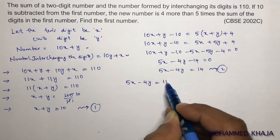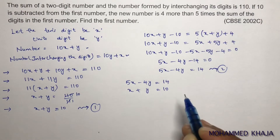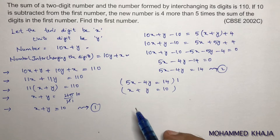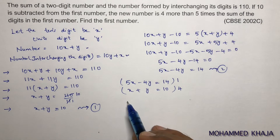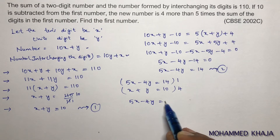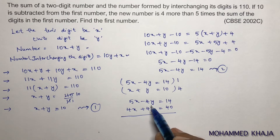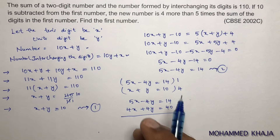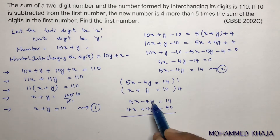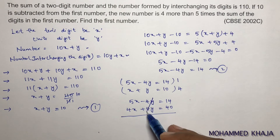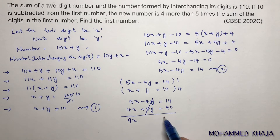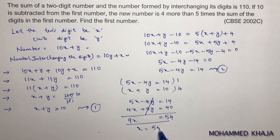Using the elimination method: to make the coefficients of y equal, multiply equation 1 (x + y = 10) by 4 to get 4x + 4y = 40, and keep equation 2 (5x − 4y = 14) as it is. Adding both equations: 9x = 54, so x = 6.